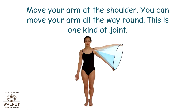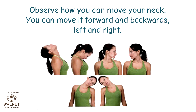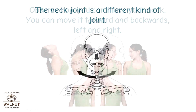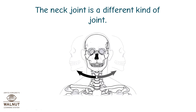Move your arm at the shoulder — you can move your arm all the way round. This is one kind of joint. Now observe how you can move your neck. You can move it forward and backwards, left and right. The neck joint is a different kind of joint.